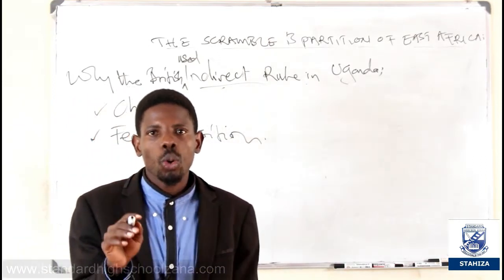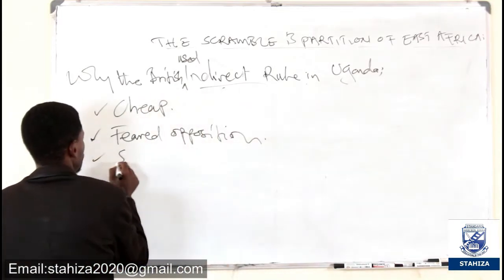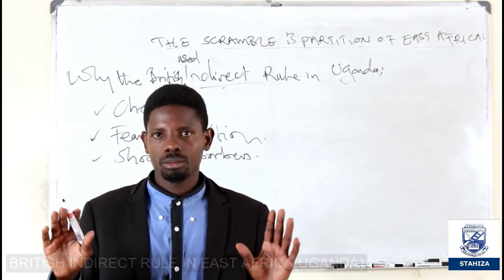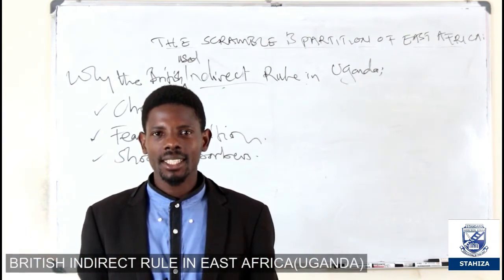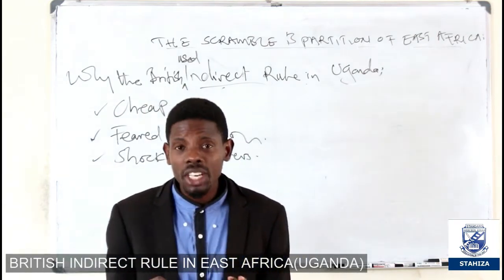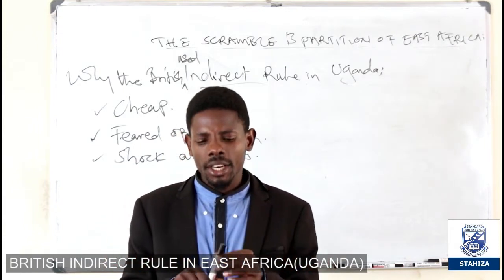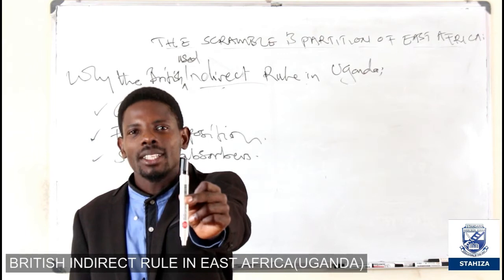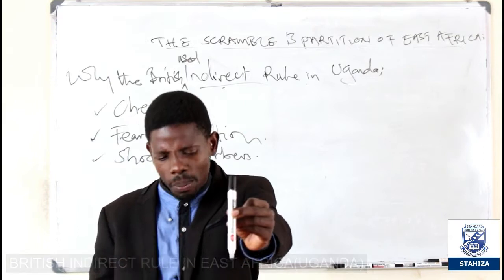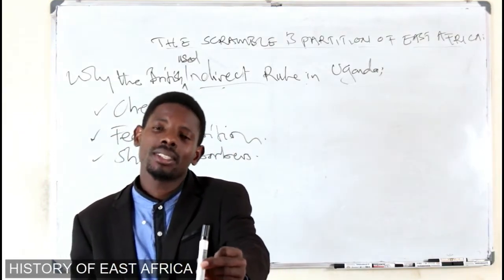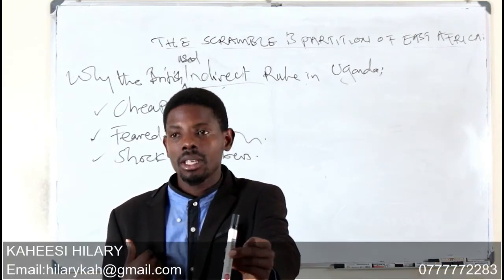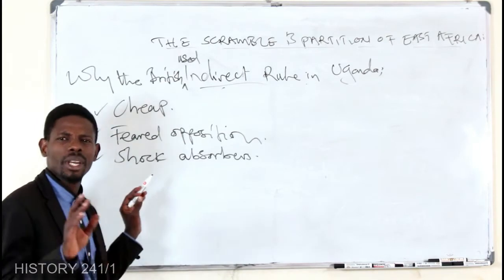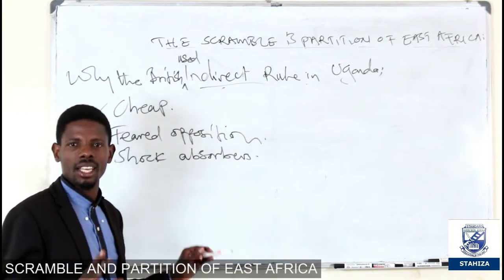The African chiefs also had to act as shock absorbers. This means they were used to deliver unpopular messages for the British. If there was a problem with the people, the chiefs would receive the blame instead of the British. For instance, if I tell you to go and announce that the market price is one tower, and the people are unhappy, they will blame you, not me. So the white men did not want the blame — the African chiefs and kings were there to absorb it.